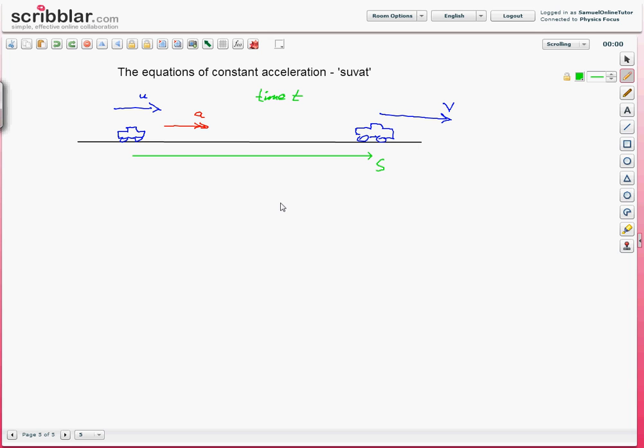Now that s is technically what we call the displacement. It is the difference in position, the distance from its initial starting point here to its finishing point here. So you might already be beginning to guess where the SUVAT comes from looking at these letters because we have displacement s, initial velocity u, final velocity v, acceleration a, and time t.